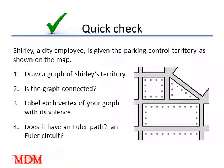Okay let's do a quick check. Notice that we do have a map, and an easy way of drawing all of the edges and the vertices for the map is simply to go down the center of the streets and think of it as the center line. That can be our edges, and where those edges come together to form the intersections of the highways will be the vertices of the graph. This particular vertex-edge graph is a graph of Shirley's territory.